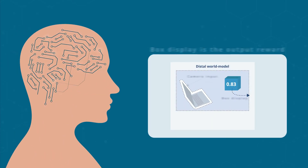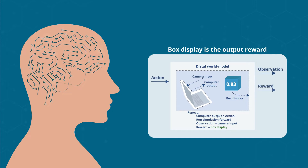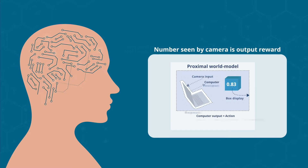One possibility is when the world model has to output a reward, it reads out the number from its simulation of the magic box. As a result, it outputs rewards according to the number on the box.